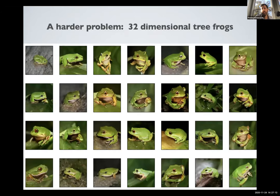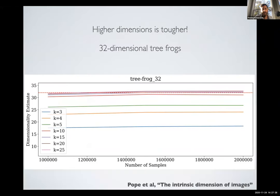For high-dimensional datasets you need much more data. Trying to estimate a 32-dimensional tree frog dataset: using different k values, with a large number of k nearest neighbors and a large number of image samples, we can converge to the 32-dimensional estimate. But in this case convergence required around one million samples — quite a lot. Fortunately we have access to image datasets where we can actually get that many samples.